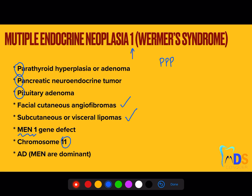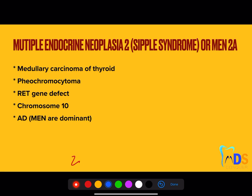MEN Type 1 is mainly due to a MEN1 gene defect, which is located on chromosome number 11. This MEN1 syndrome is autosomal dominant. You can remember that all types of MEN — that is MEN 1, MEN 2, MEN 3, and MEN 4 — are all autosomal dominant. Simply remember: all MEN types are dominant.